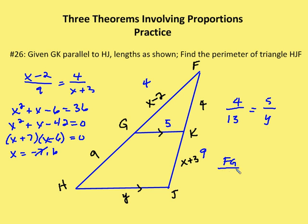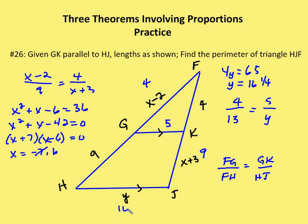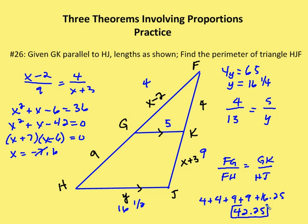FG over FH equals GK over HJ. Solving for Y, we have 4Y equals 65, so Y equals 16 and one quarter. With Y equal to 16.25, GF and GH equal to four and nine respectively, and FK and KJ equal to four and nine respectively, the perimeter is 4 plus 4 plus 9 plus 9 plus 16.25, which equals 42.25.